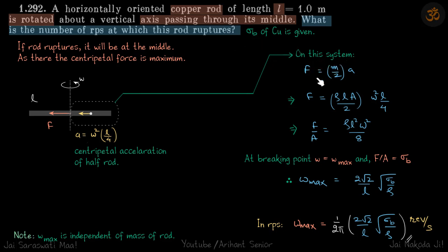So on the system, F is equal to M by 2 into A. So M by 2 for the half rod. A we will put omega square L by 4. And mass for the whole rod will be rho L A. So from here we get F by A is equal to rho L square omega square by 8.